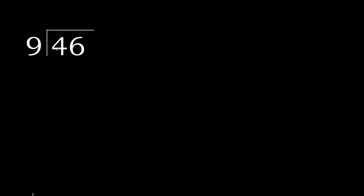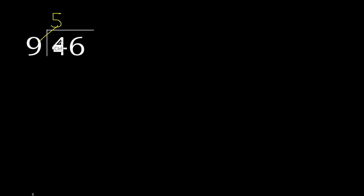46 divided by 9. 4 is less, therefore next. 46 is not less. 9 multiplied by which number is nearest to 46 but not greater? 9 multiplied by 6 is greater, so multiplied by 5: 45 is not greater.